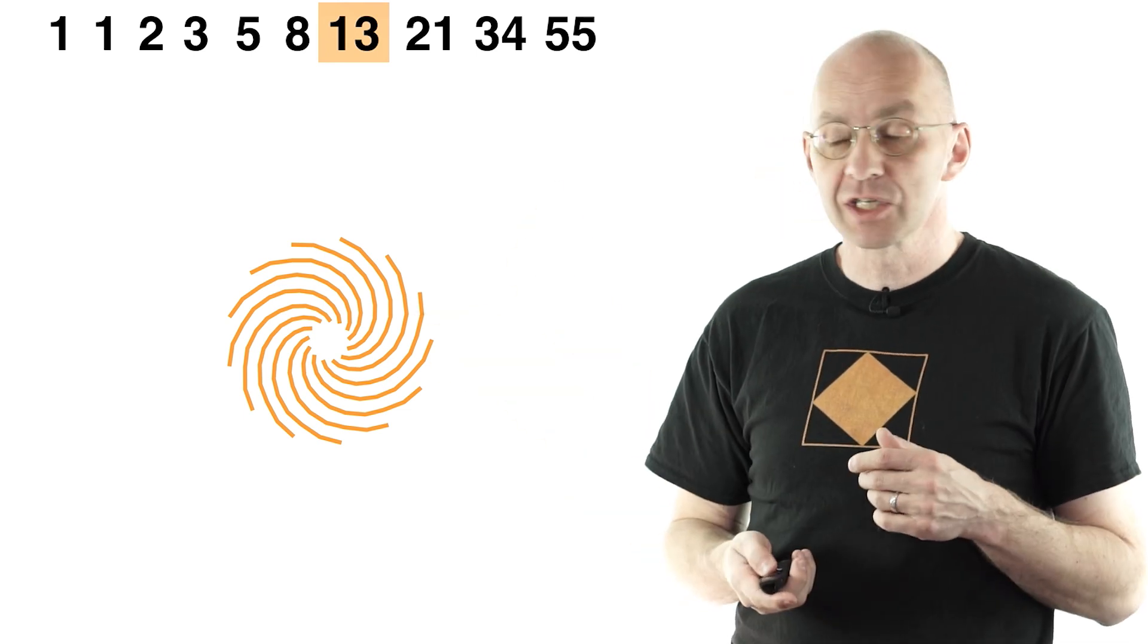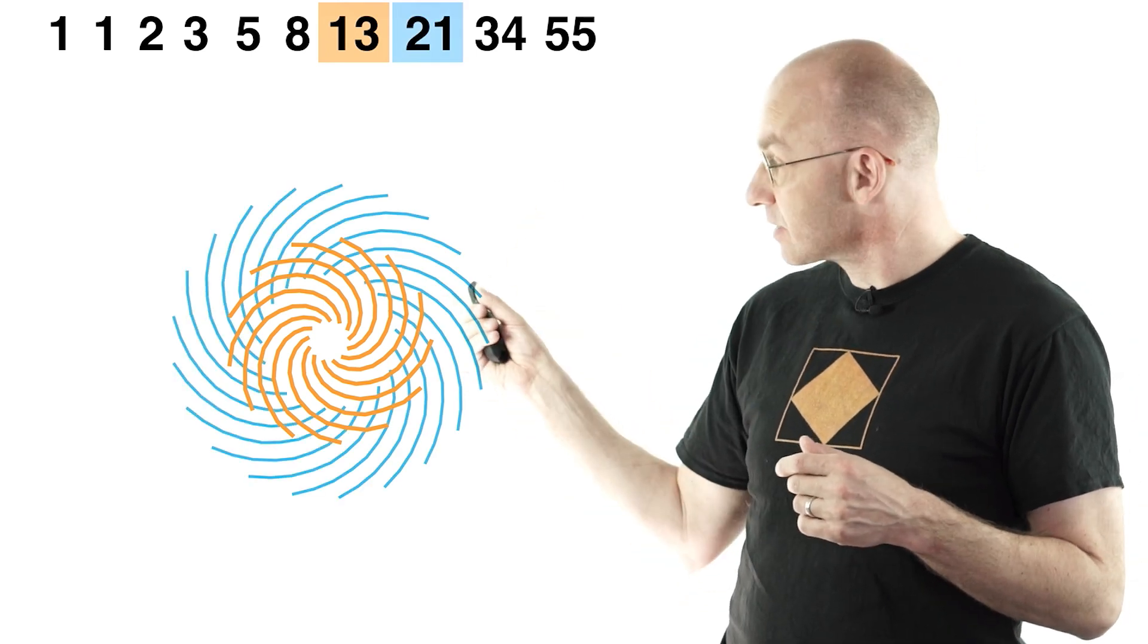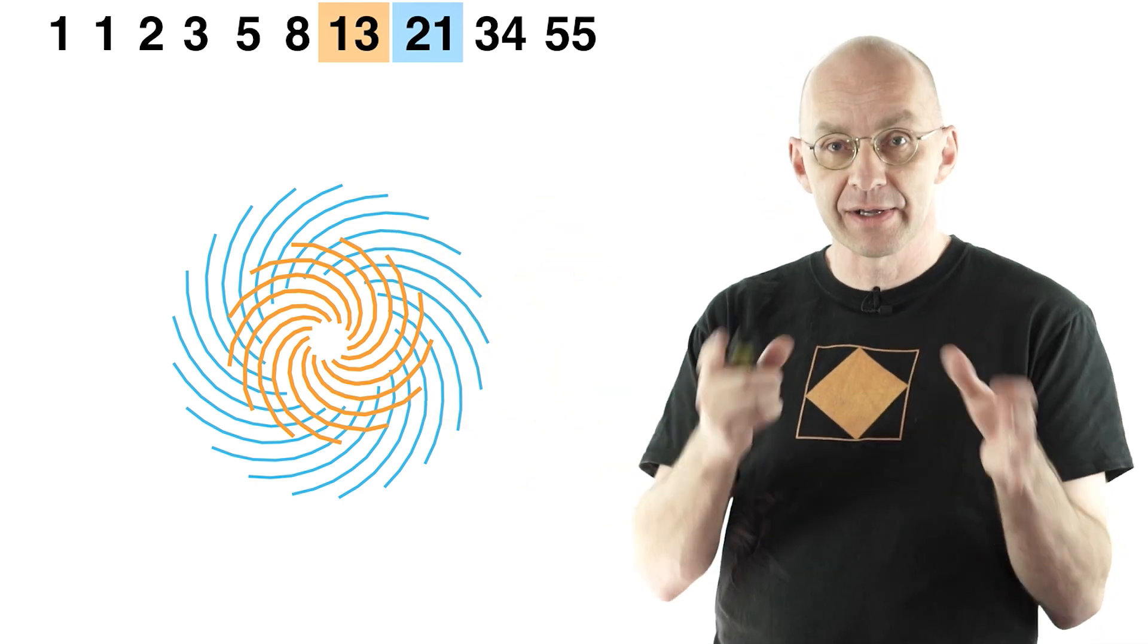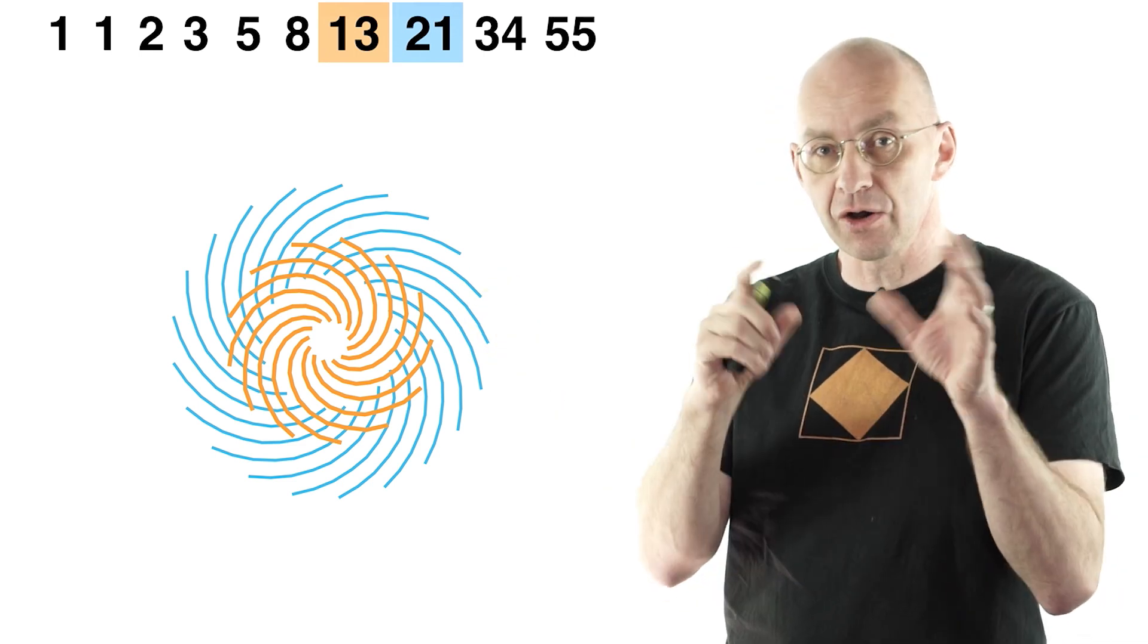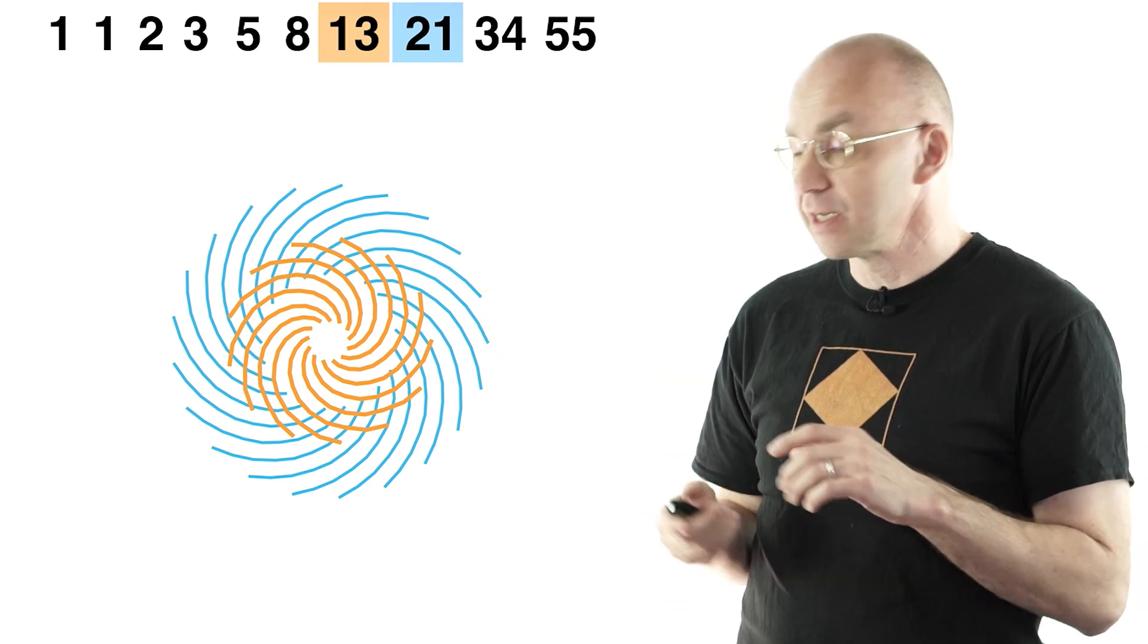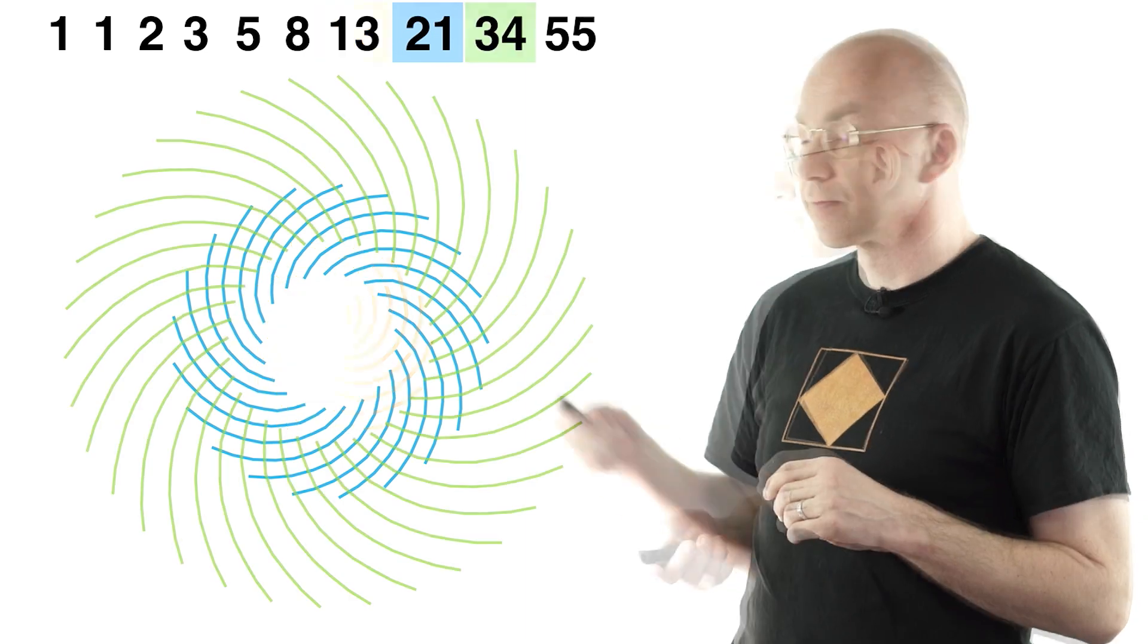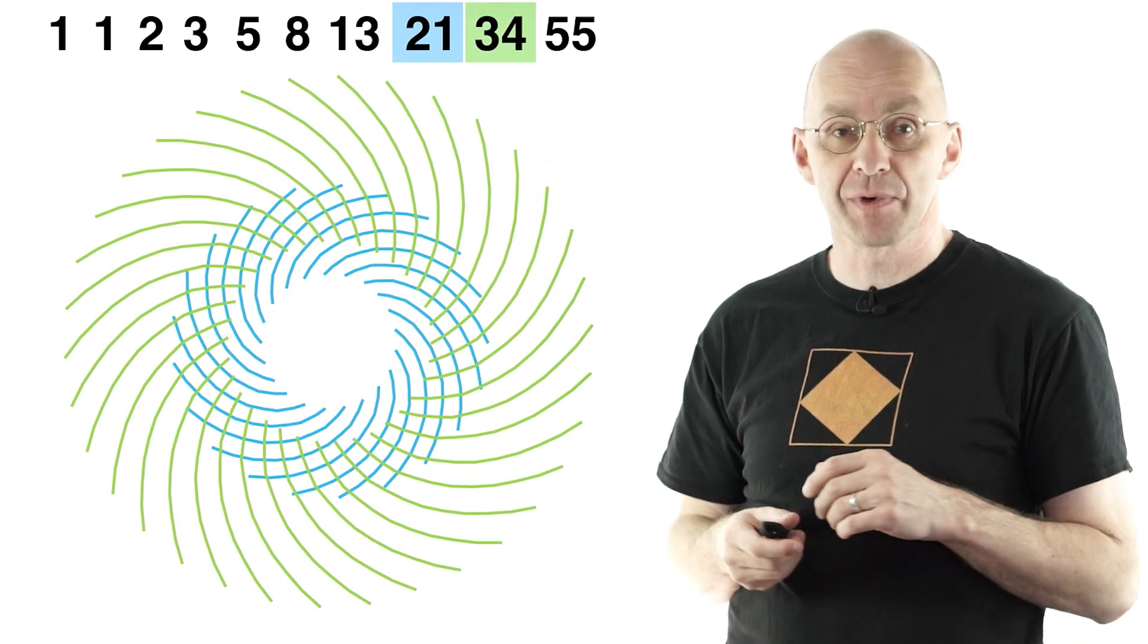So 13 is visible here. 21 further out but there's always this region where they overlap. So consecutive numbers when you see them in the plant are occupying different regions but they're always overlapping here with the next two. 21 and 34.